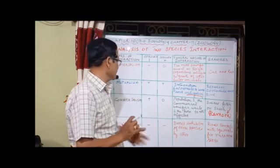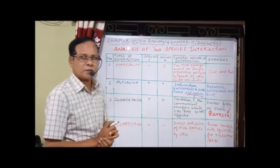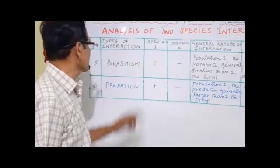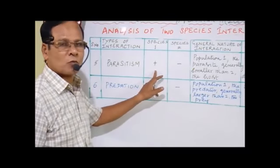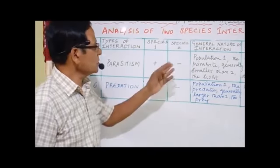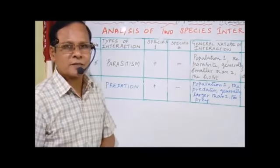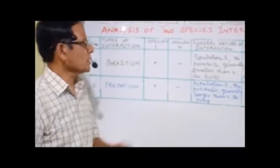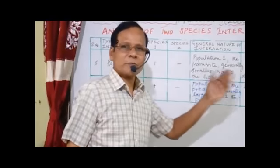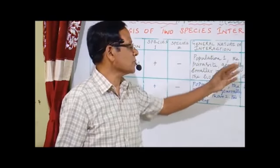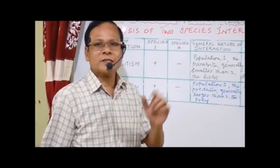Two more interactions to represent: parasitism and predation. Parasitism: one partner or one species gets benefited and there is a loss for the second species. Population one — the parasite — is generally smaller than population two, the host. Examples include endoparasites present within the body of humans like Ascaris and tapeworm, present in the human digestive tract.